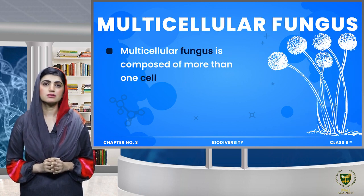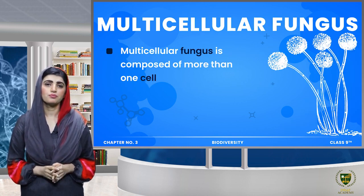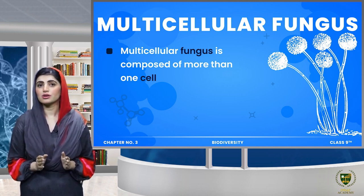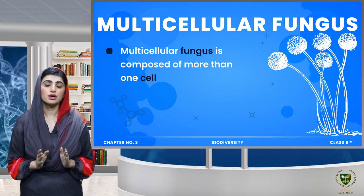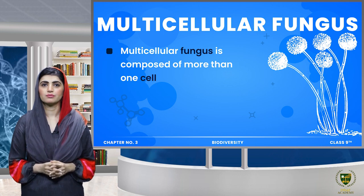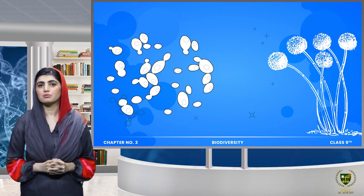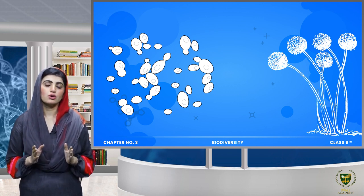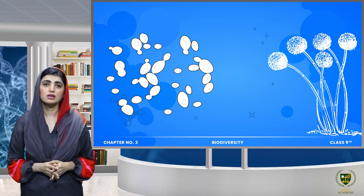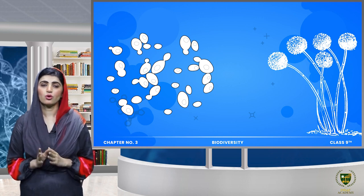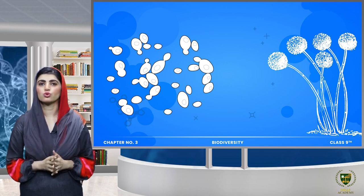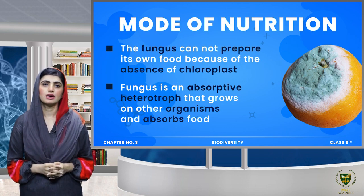Along with this, fungus can also be multicellular — meaning made of many cells. So fungi have two types of organization: unicellular and multicellular. Yeast also shows colonial organization.